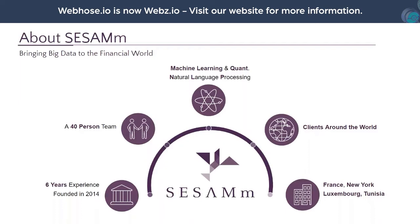Sesam is a six-year-old company founded in 2014 with a 40-person team. We work on two aspects: first, natural language processing technologies — extracting insights from massive amounts of web data to help clients make investment decisions such as investing in stocks, creating hedging strategies, or systematic portfolios. We also provide machine learning and quant technologies. Our clients include Nomura, Milliman in Chicago, and Assicurazioni Generali. Our offices are based in France and we're also present in New York, Luxembourg, and Tunisia.